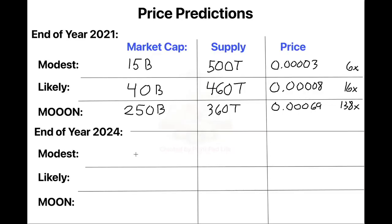That's my end-of-year price predictions. Now I'm going to do my three-year price predictions for modest, likely, and moon. My three-year modest prediction would be a $20 billion market cap, $160 trillion supply, leaving us with a price of $0.001, or 25x where we are from now. That's about a hundredth of a penny.